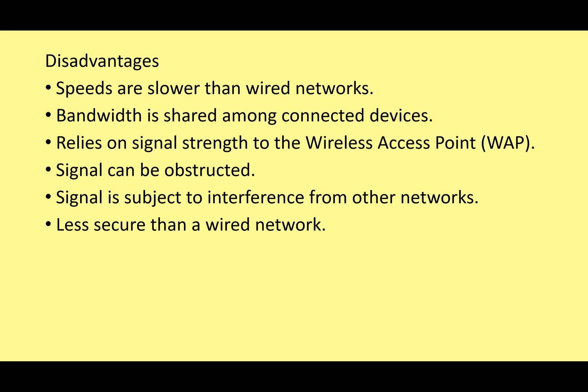It's also less secure than a wired network. With a wired network, unless somebody has physical access to the cable, they can't get at that information. With Wi-Fi you're broadcasting your signal and it's possible that somebody with a device can receive it and potentially use that information — although nowadays signals are encrypted, which we'll look at later.